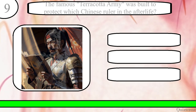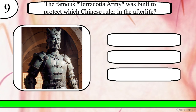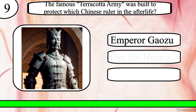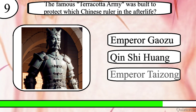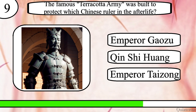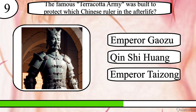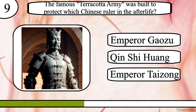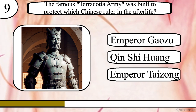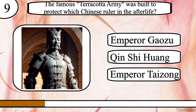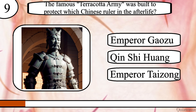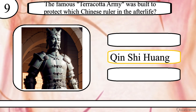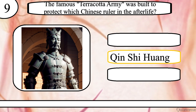Question 9. The famous terracotta army was built to protect which Chinese ruler in the afterlife? Emperor Gaozu, Qin Shi Huang, or Emperor Taizong? The correct answer is Qin Shi Huang.